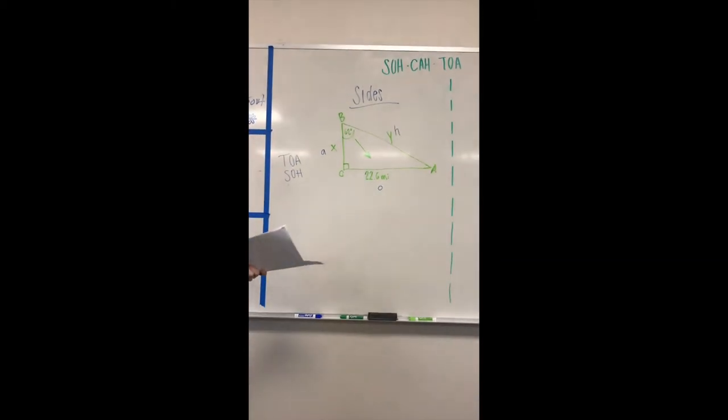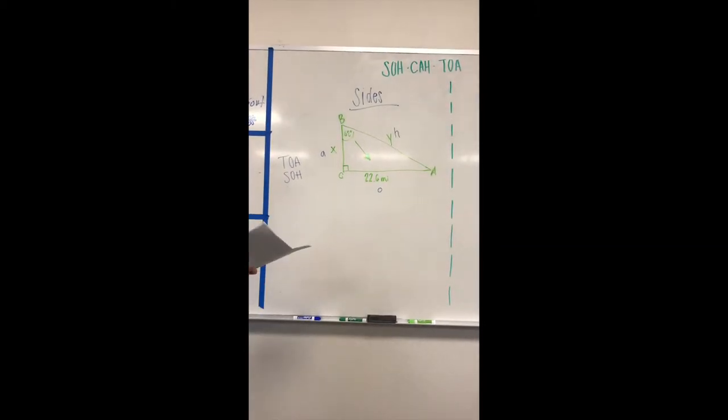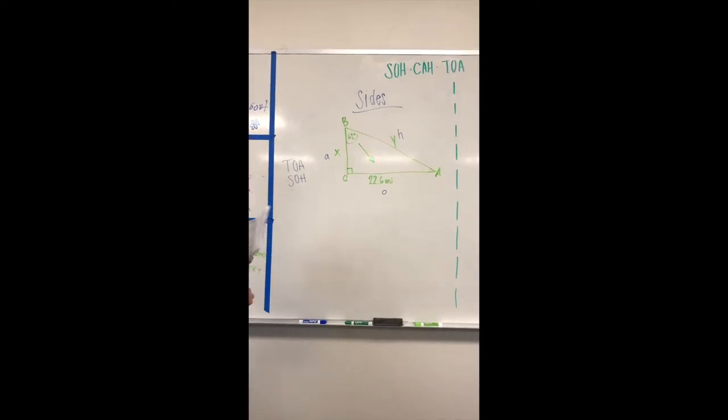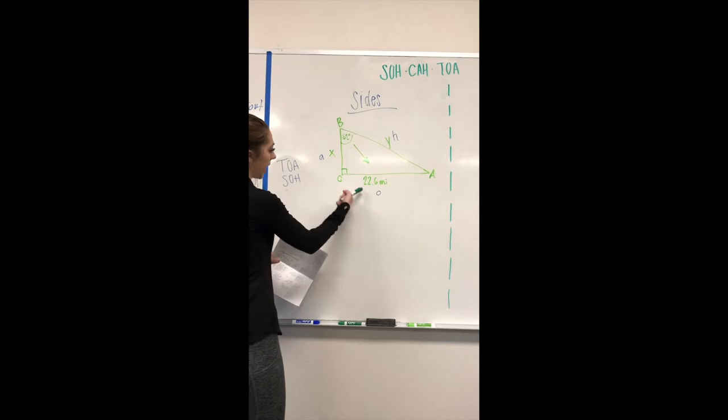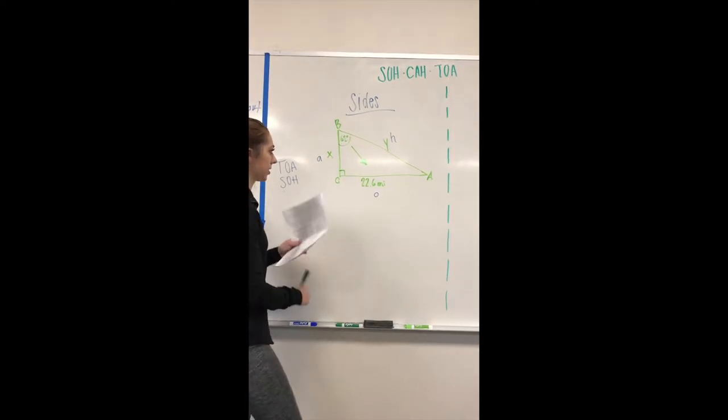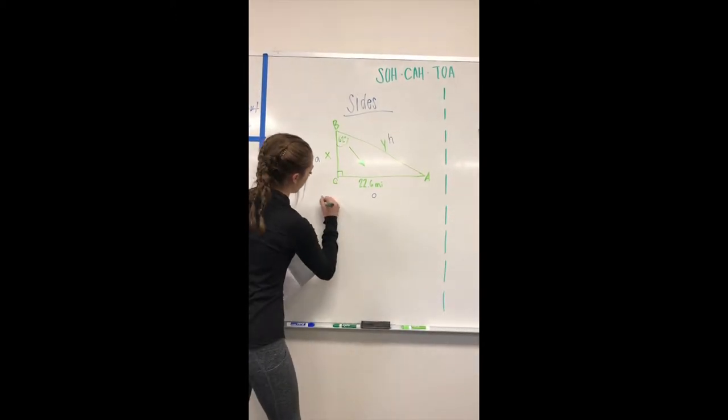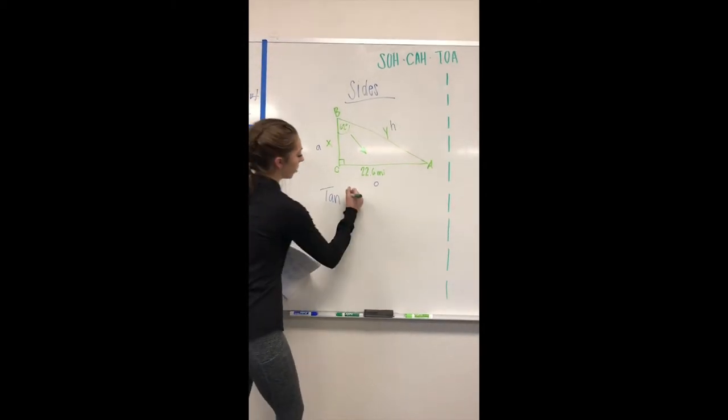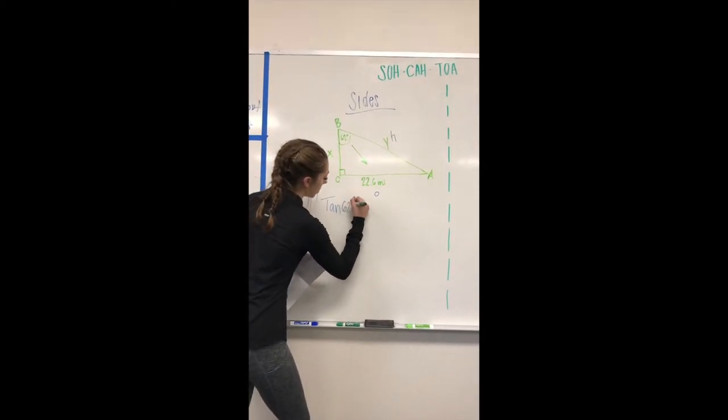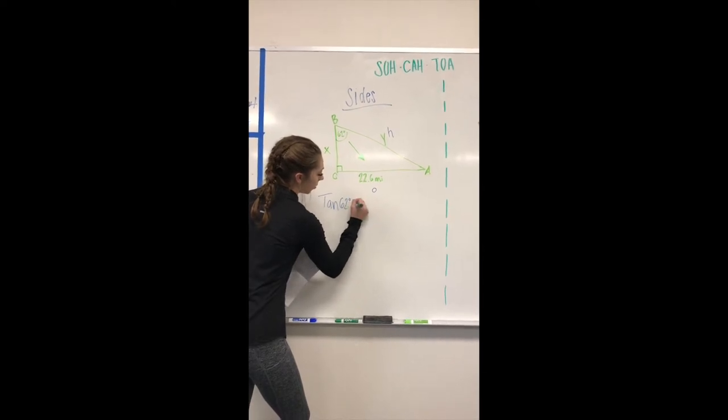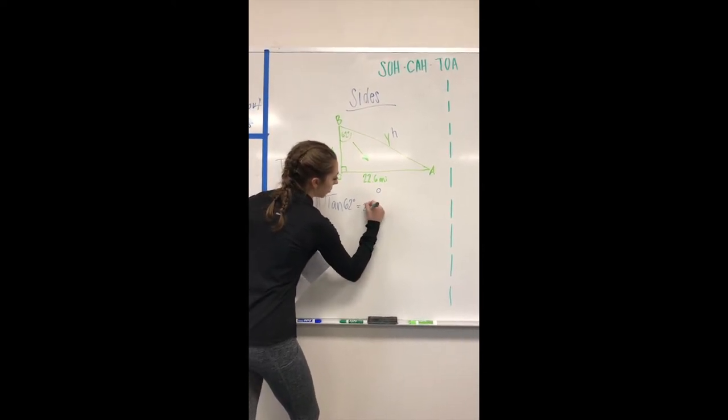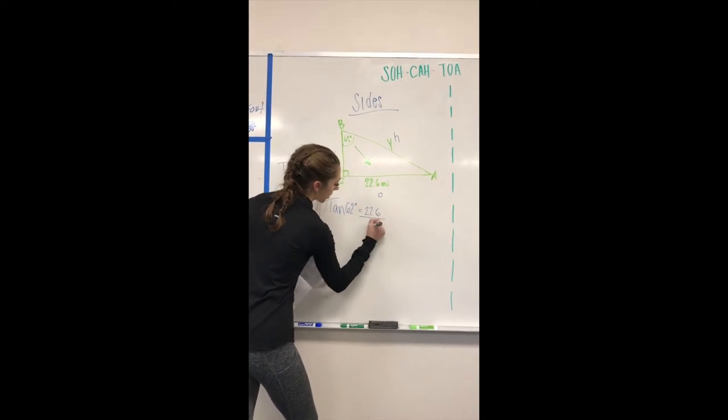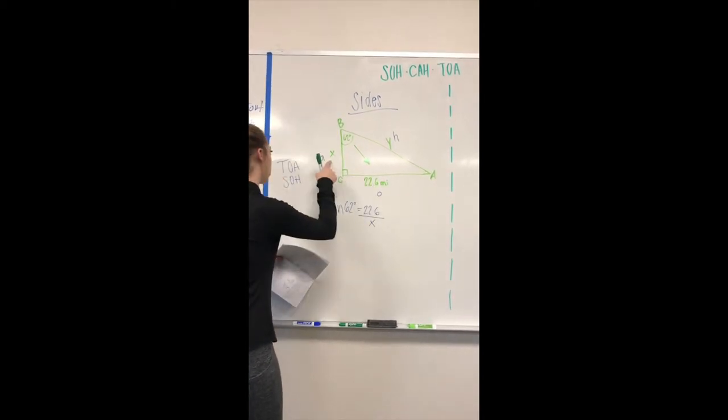Next we'll start solving the triangle to find the other sides. We're first going to use tan because we have the x and the 22.6. You're going to write tan, then your angle, which is 62 degrees, equals 22.6. Then we put that over x because it's opposite over adjacent.